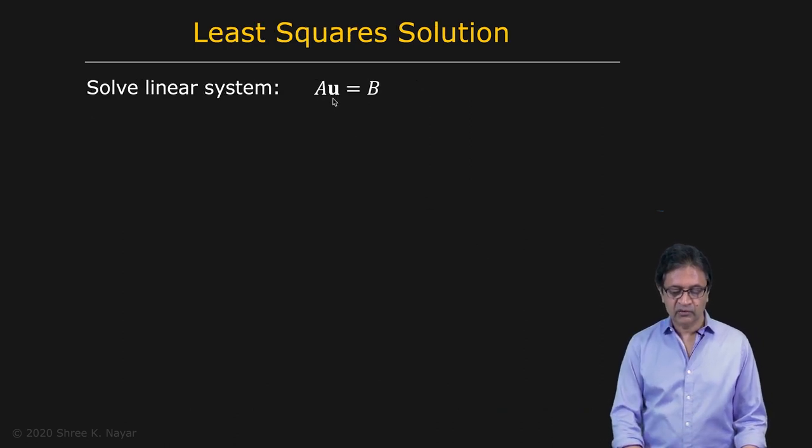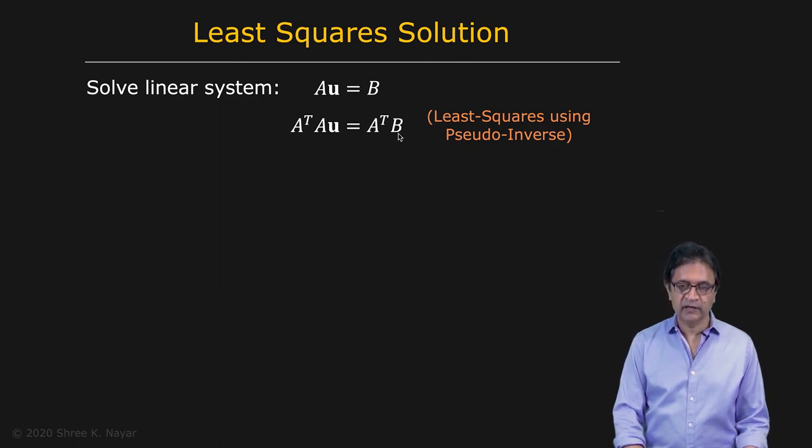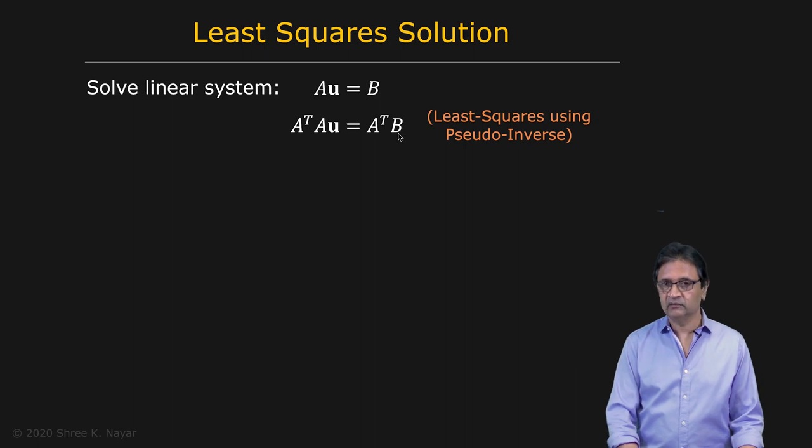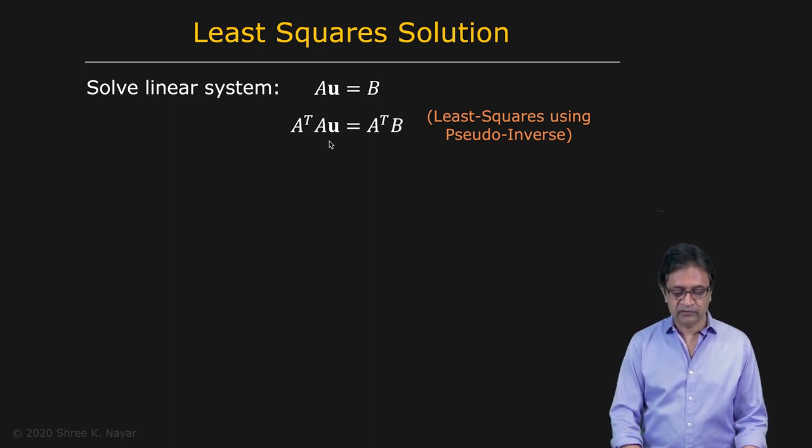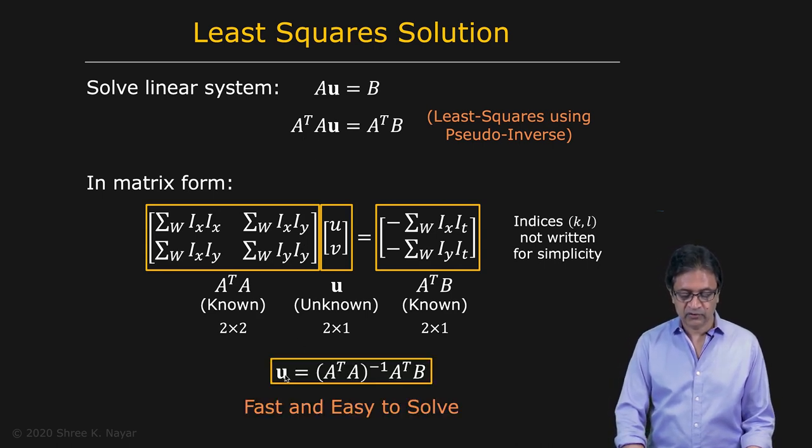We have Au = B. We take A transpose A times u equal to A transpose B. And we know how to do this. We simply find the inverse of this. So this is the same written in matrix form right here with all the elements, and we take the inverse of A transpose A and we can find a solution for u.